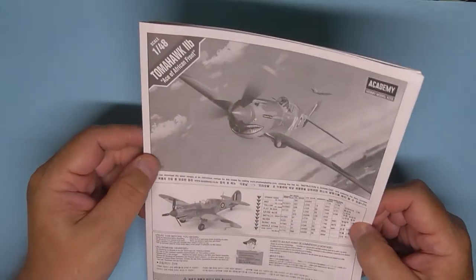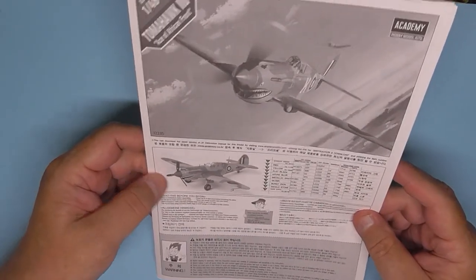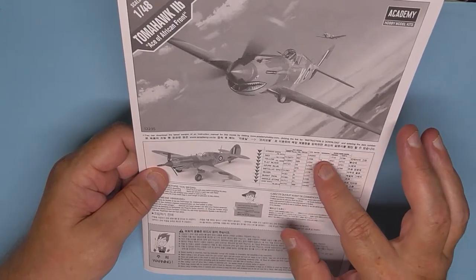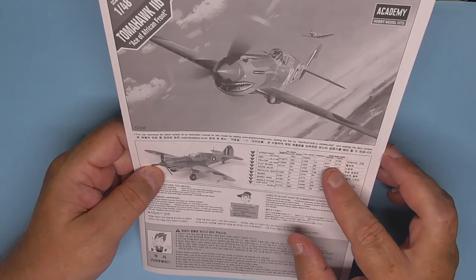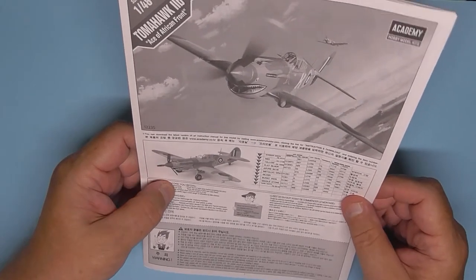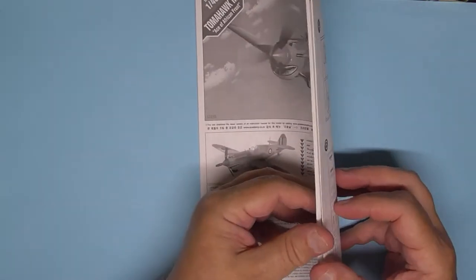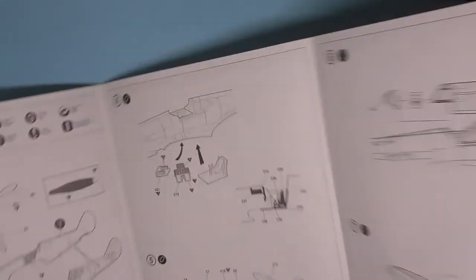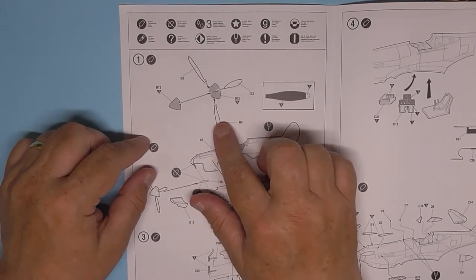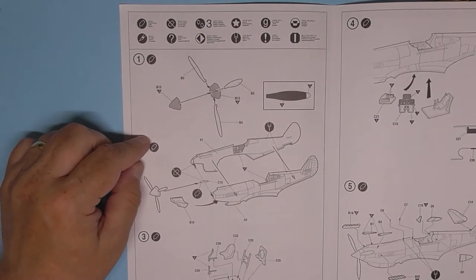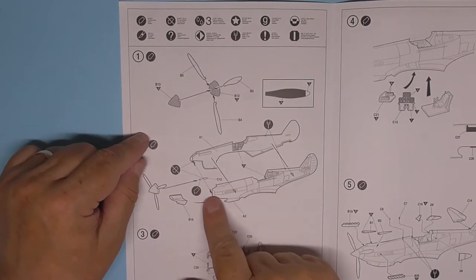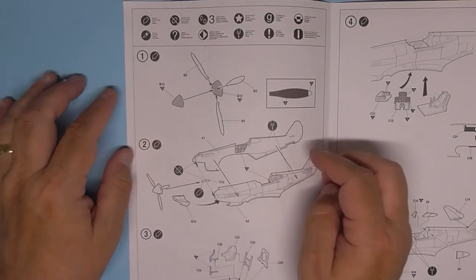Instructions. Before you begin you got paint callouts there in GSI Creos, LifeColor, Humbrol, Testors enamel or acrylic. I think I've got some Vallejo desert colors. It's a fold-out shape so you start off and you build it with separate propeller blades, which is all right by me. I'm not happy about putting it onto the fuselage so early on in the build.